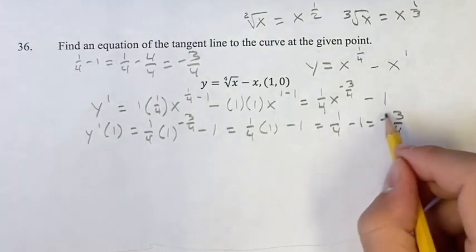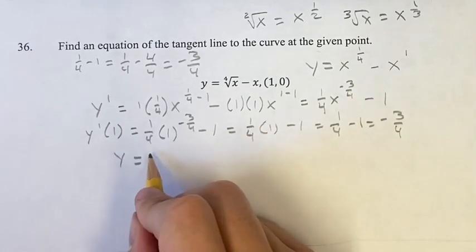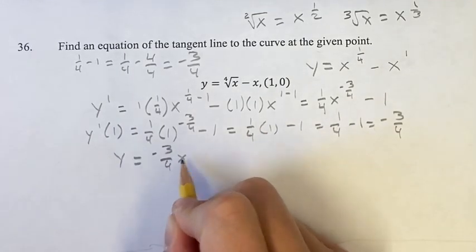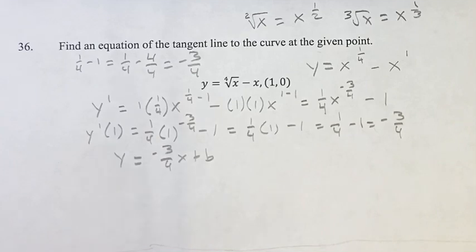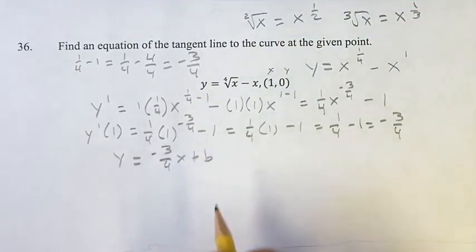Now, this is the slope of the tangent line at this point. We still have to find the y-intercept. Negative three-fourths x plus b. We have three variables in this equation, but luckily we know x and we know y. We can solve for b.